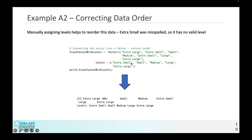Example A2, correcting the data order. So manually assigning levels helps to reorder this data. And extra small is misspelled, so it has no valid level as it shows up as NA. But to do so, we go sizes factor with levels. We declare the same factor that we had earlier in the previous slide. However, we add another parameter, which is levels. So for the levels parameter, we have extra small, small, medium, large, extra large. So data will be ordered in this order. Going down, we have extra large NA, where extra small would be because it is not a valid level, small, medium, extra small, and so on.